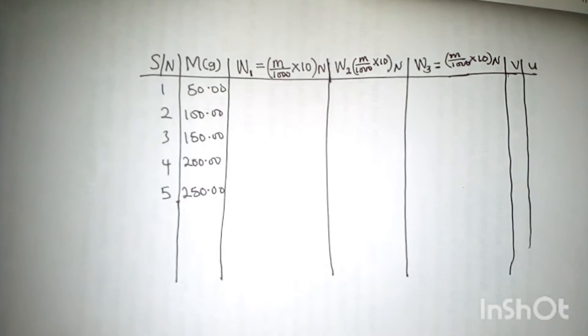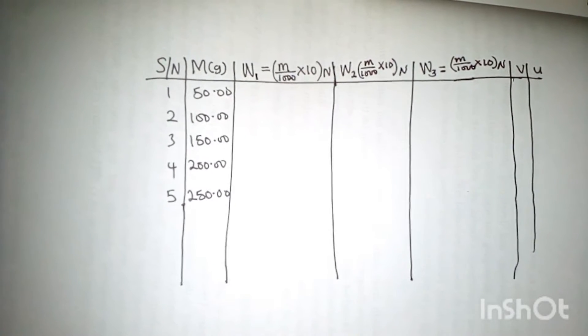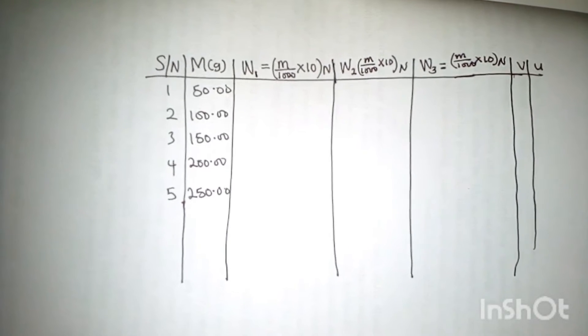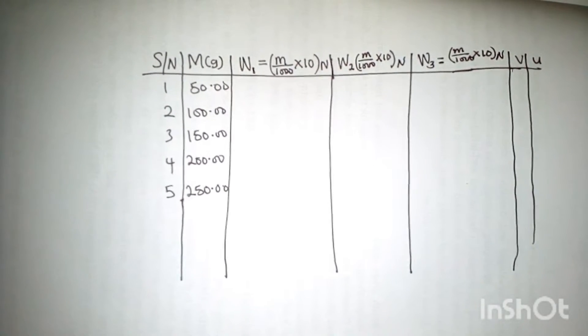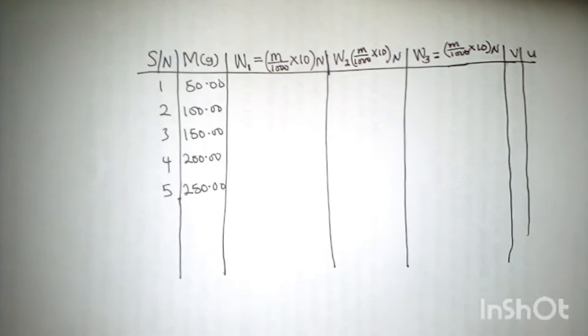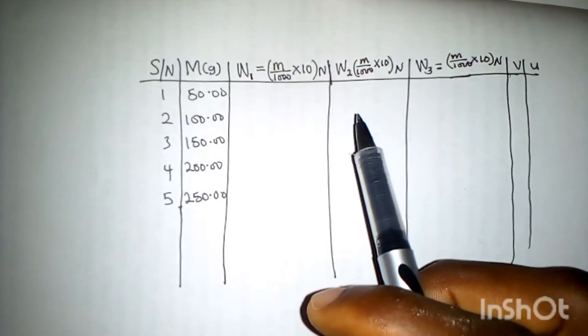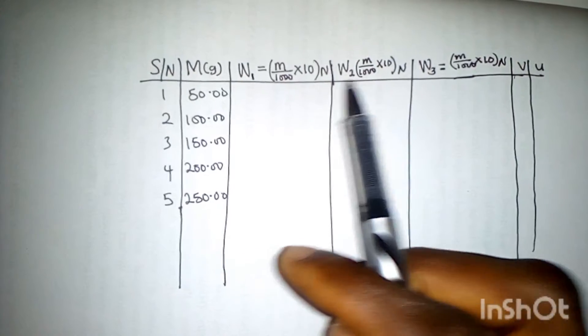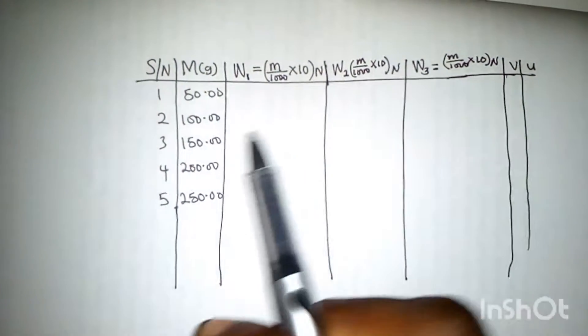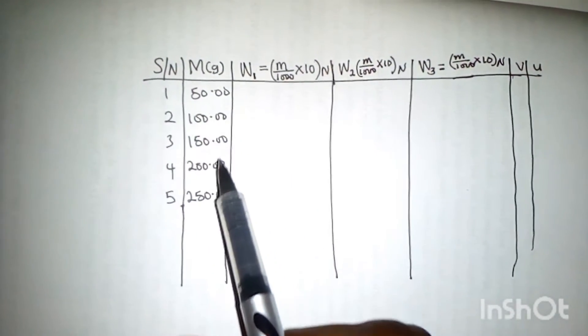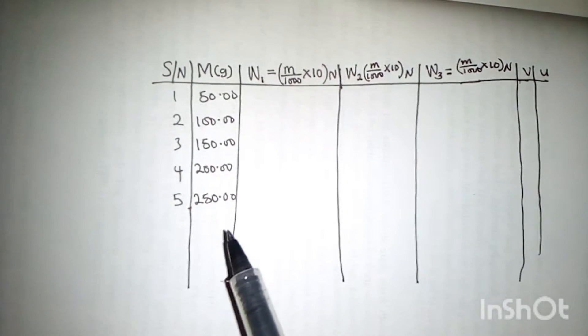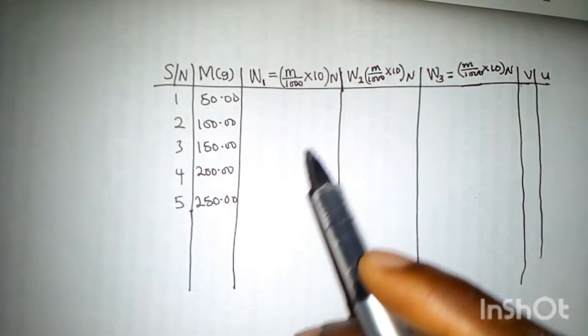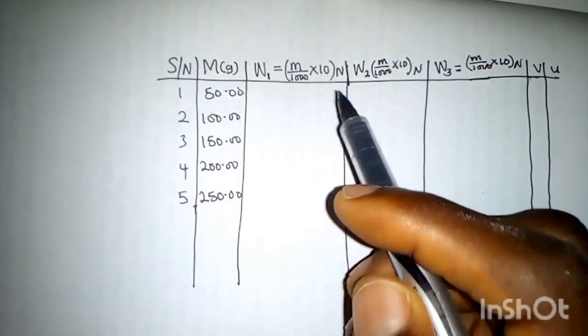Nothing is wrong with the table, we just need to adjust one or two things. If you check the table we drew in the previous video, you'll see that W1, W2, and W3, the masses which are 50, 100, 150, 200, 250 grams, were not converted to kilograms. We're supposed to convert them to kilograms first.